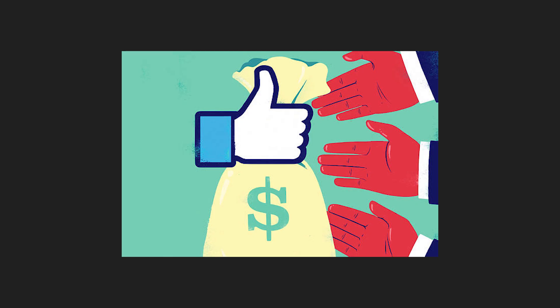Dividend is distribution of profits made by a company to its shareholders. Say a company makes good profit in a particular quarter — a proportion of this profit is given to its shareholders in the form of dividends.